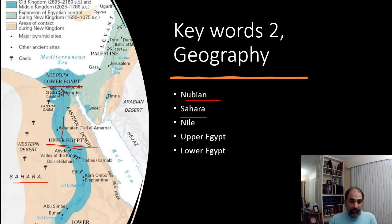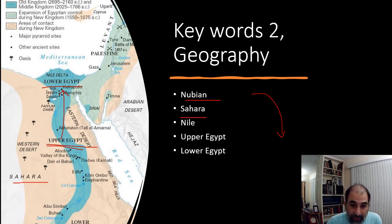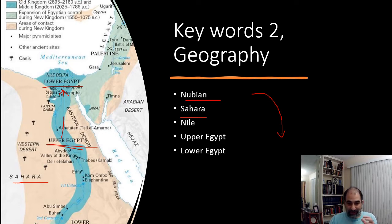Another interesting feature: the Nile flows south to north, but the wind currents very often went from north to south. This allowed the Nile to be used very effectively for transportation. To go from Upper Egypt to Lower Egypt, you let the current carry you. To go from Lower Egypt to Upper Egypt, you use the wind with sails. This allowed everyone to move up and down the Nile quickly, helping unify Egypt — like a freeway that actually moves.